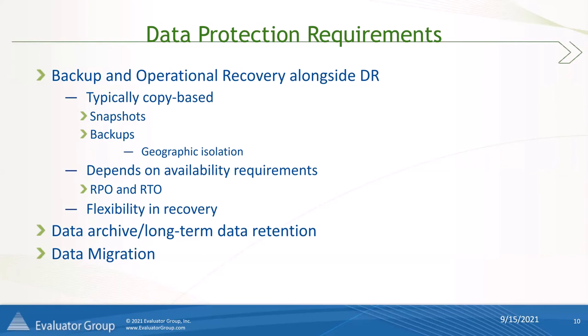Customers tend to pick and choose when they're going to implement true DR, and it tends to be for a critical application. This is really going to be driven by what we call the RPO — the recovery point objective — which is essentially the amount of data loss you can tolerate, the point in time you can recover to. And the RTO — the recovery time objective — which is how long it takes you to recover. The smaller your RPO and RTO, the more expensive the technology is going to be, because you're going to have more limited data loss and more limited downtime.